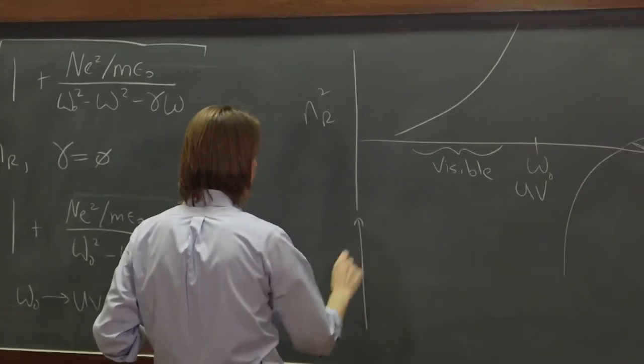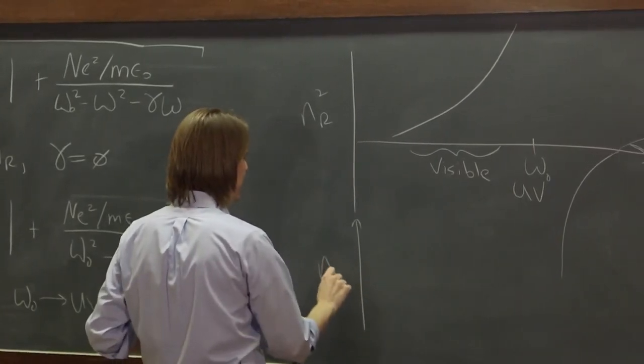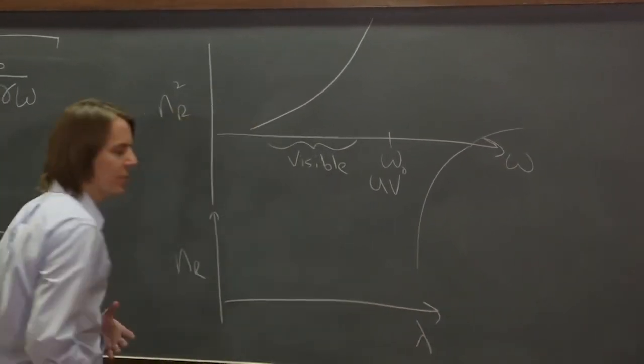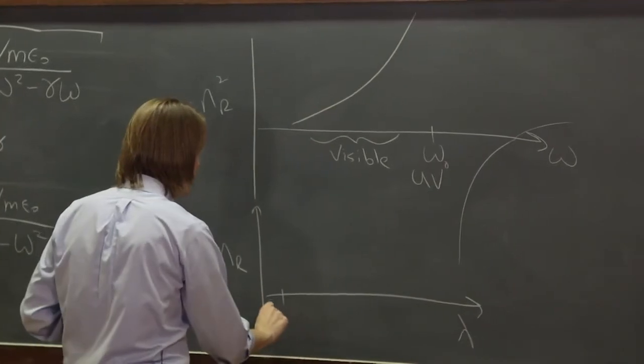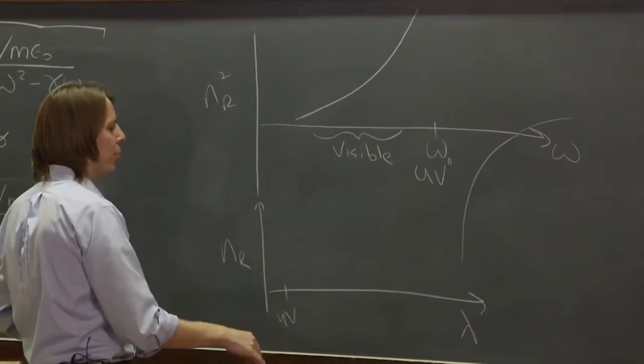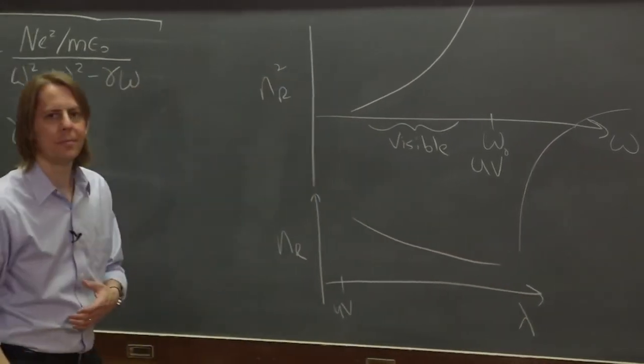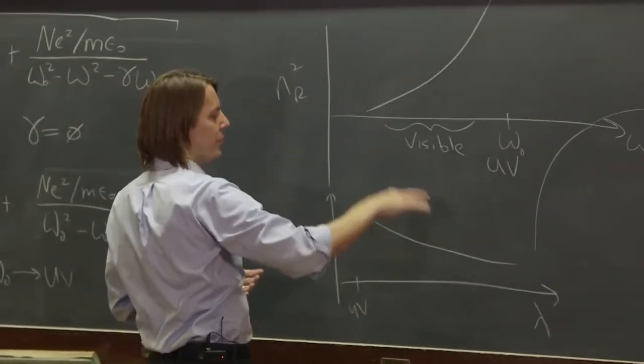But we usually think of it in terms of wavelength, we usually plot it like this, where if we have n real, and now we're plotting versus lambda, as we usually think in terms of wavelength. So the UV is way on this side, and the lower, below resonance, lower energy is over there. And if you look up plots of the index, it looks kind of like that. And that is due to this curve.